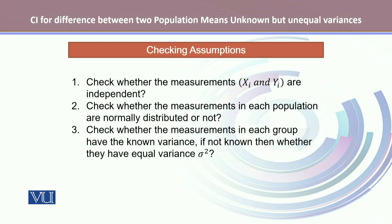We will check for three assumptions. The first assumption is to check whether the measurements are independent in both the groups. We check whether the measurements in each population are normally distributed or not. And thirdly, we will check whether the measurements in each group have known variance, and if not known, whether they have equal variances.